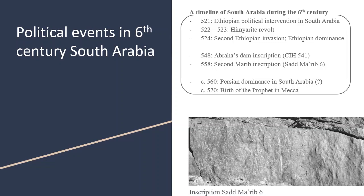Beyond this point, our understanding of South Arabia's history relies almost exclusively on Islamic period narratives. Although there are some minor disagreements among the Muslim historians, they basically agree that after Abraha's conquests, the Ethiopians ruled South Arabia for a few more decades. At that point, a local South Arabian prince overthrew the Ethiopians with the help of the Sasanians in Persia, but this prince was killed shortly thereafter, and the Persians assumed direct control. A few decades later, the Prophet is supposed to have sent a letter to the Persian governor of Sana'a, who promptly converted to Islam. The general outline of the narrative — the Himyarites were conquered by the Ethiopians, who were overthrown by the Persians, and they ruled South Arabia until the coming of Islam — has generally been accepted by medieval and contemporary historians.